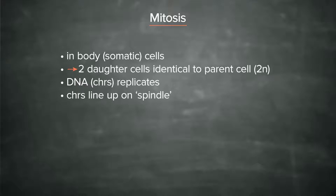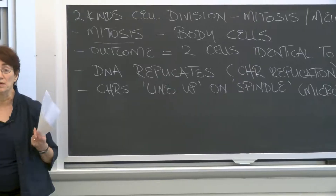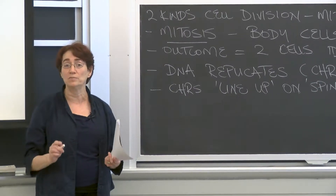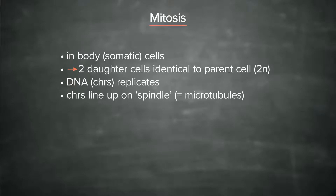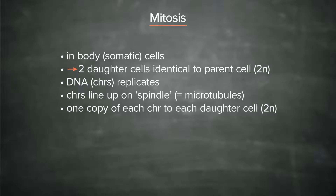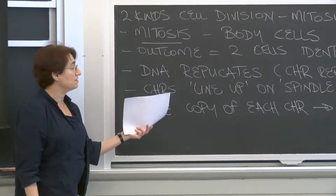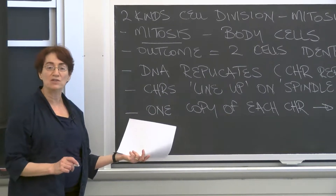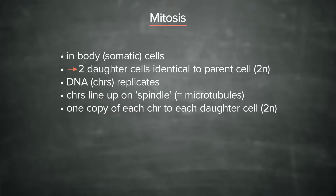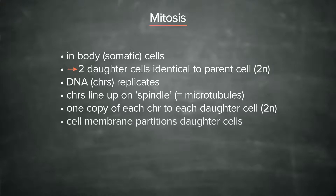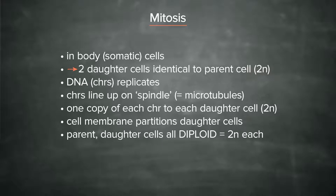The spindle, for those of you who want to know, is made of a particular type of cellular structure called microtubules. What is really important is that one copy of each homologous chromosome is going to go to each of the daughter cells. So you start off with a mother or parent cell that is diploid, and you end up with two daughter cells that are also diploid, because the cell membrane partitions the new cells from each other. The mother and daughter cells are all diploid, or 2n.